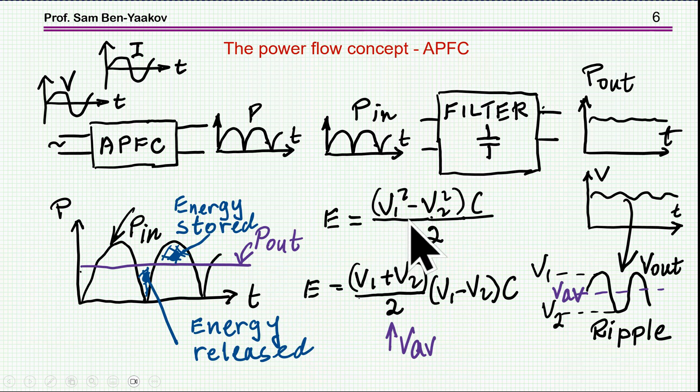Now, the energy stored is V1 squared, V2 squared over 2. V1 and V2 are the voltages of the ripple, the peak-to-peak voltages. And we can see that the larger difference, the more energy you can store. Or, for a small ripple, if you like to have a small ripple, you need a large capacitor. We can look at it in a different way. I'm breaking down this expression here into plus and minus. And what you can see is that the energy is related to the average voltage and the voltage ripple. So, if you have a higher average voltage, you can get by with a smaller ripple or a smaller capacitor.